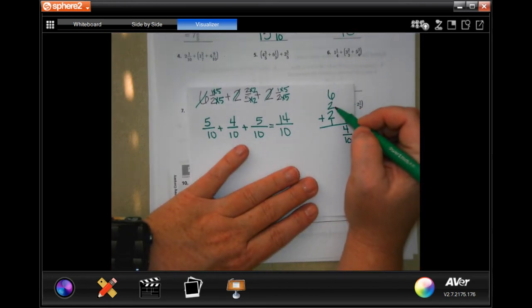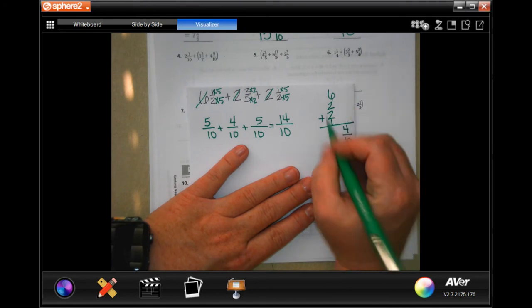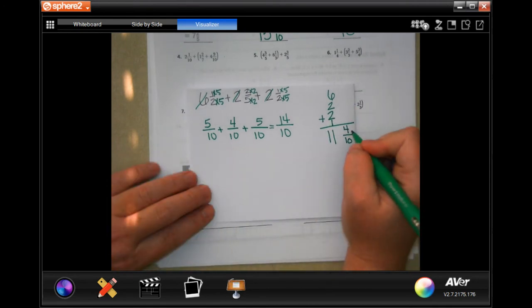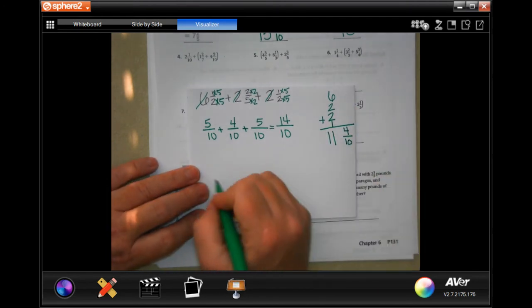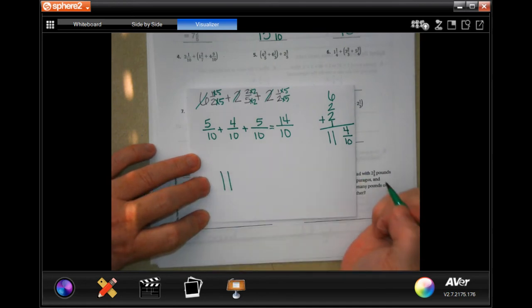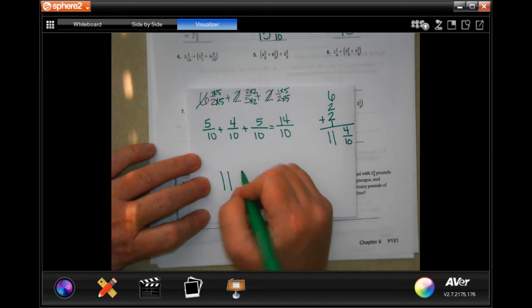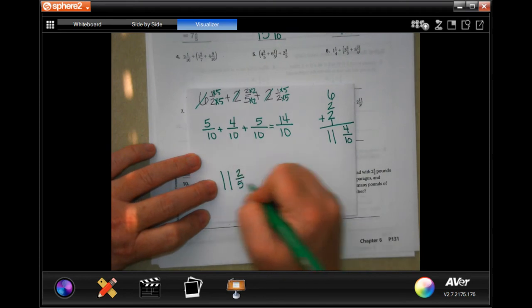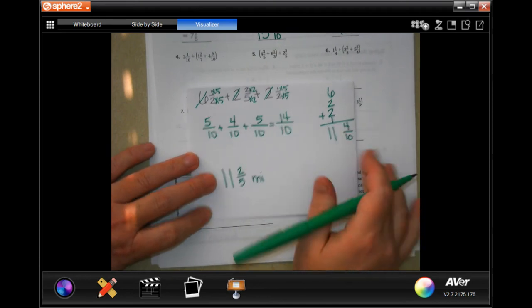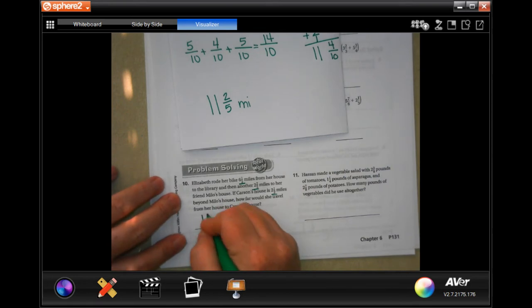So, now, 6 plus 2 is 8, plus 2 more is 10, plus 1 is 11, but 4 over 10, I can reduce. So, I'm still going to have my 11, but 2 goes into 4, and 2 goes into 10. So, 2 goes into 4 twice, and 2 goes into 10 five times. 11 and 2 fifths of a mile.